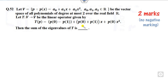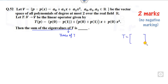Let's start with Q52. What do we want to find? The sum of the eigenvalues. The sum of the eigenvalues is nothing but the trace of the matrix. So your target is to first find the matrix T. Once you find the matrix, you simply add the diagonal entries — that is the trace, which equals the sum of the eigenvalues.